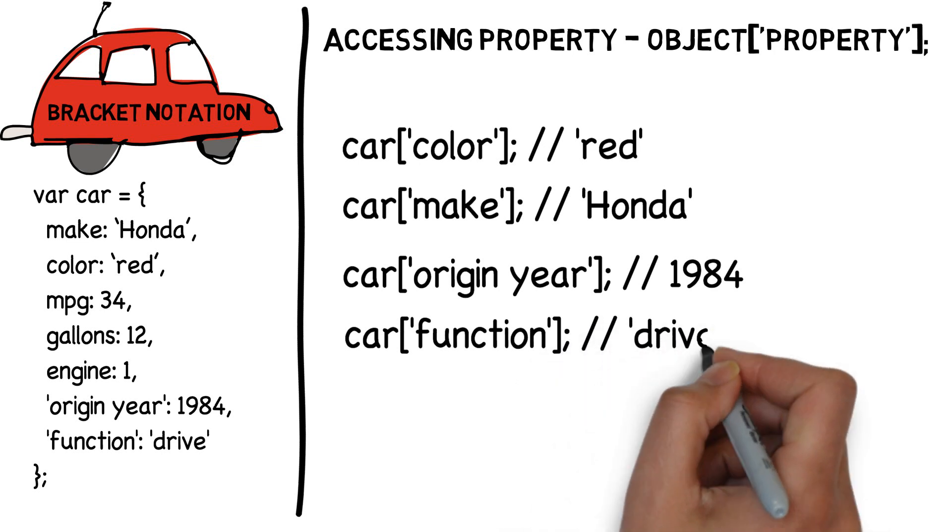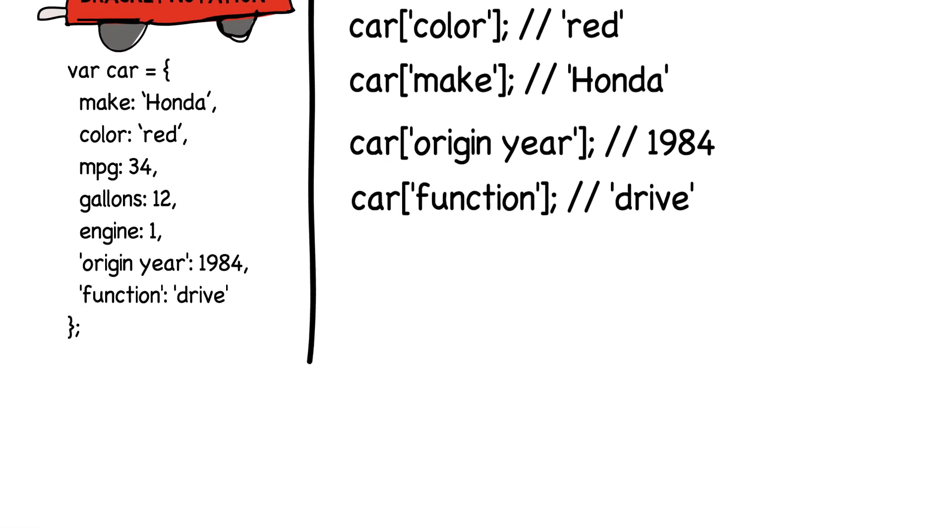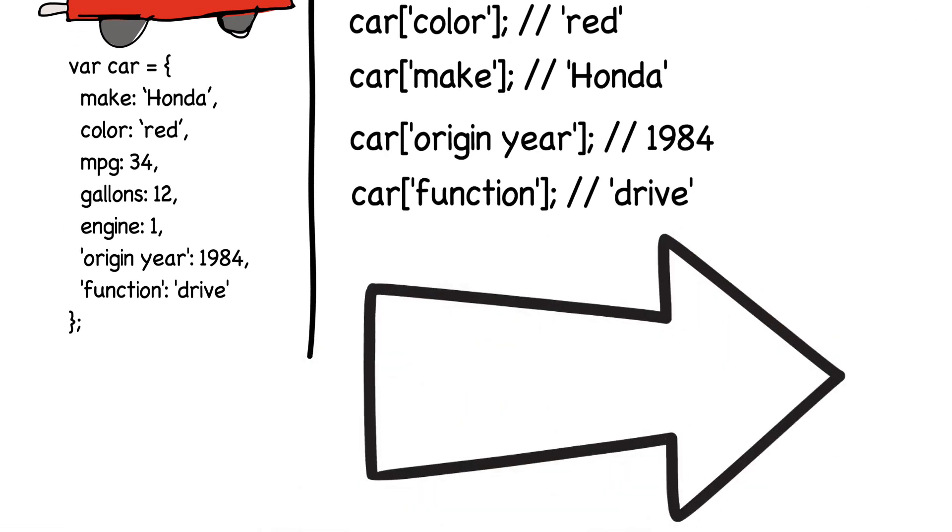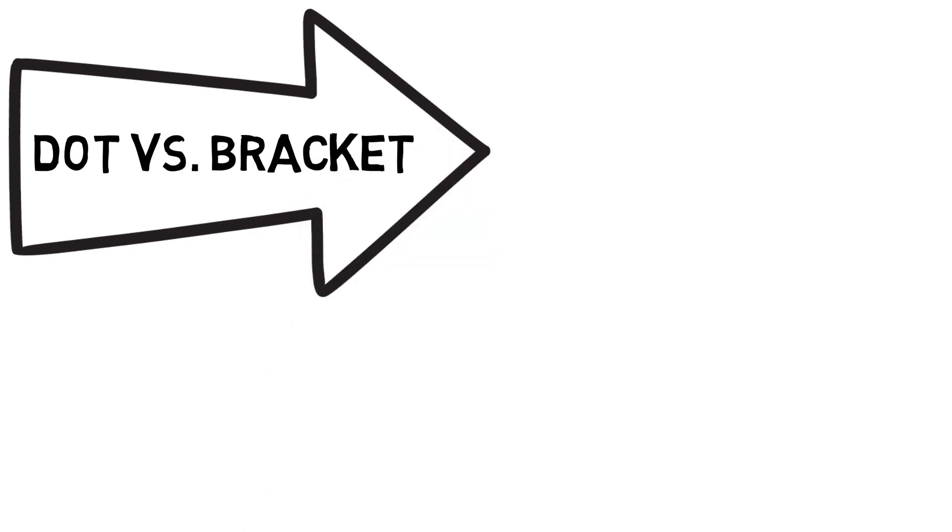If bracket notation is so much more flexible than dot notation, why is dot notation so much more popular? Let's look at these two next to each other. Remember, the best coders, the best programmers are often referred to as lazy. This means that you are always doing things in the most efficient way. This is one small example of the ease of typing dot notation often makes it the first choice over bracket notation.